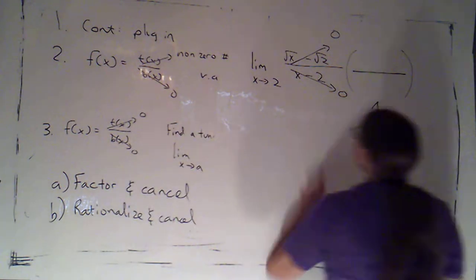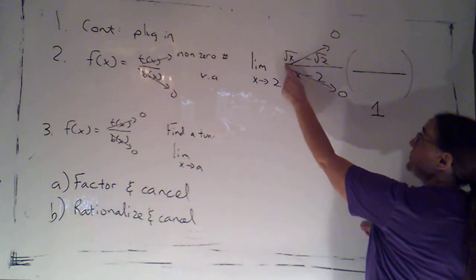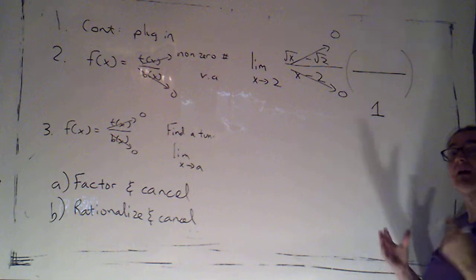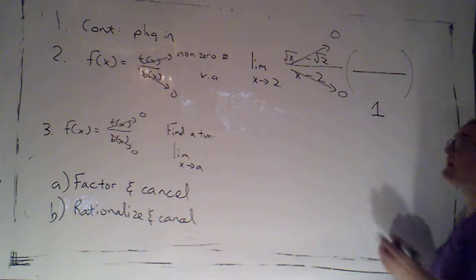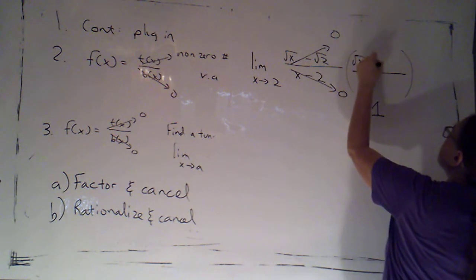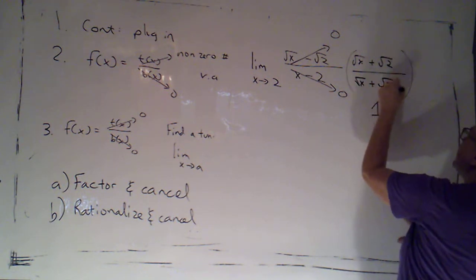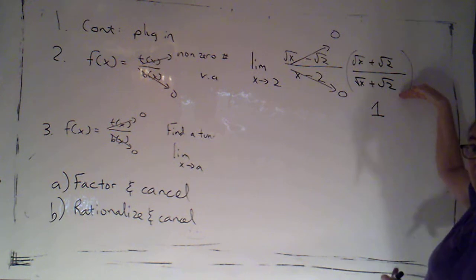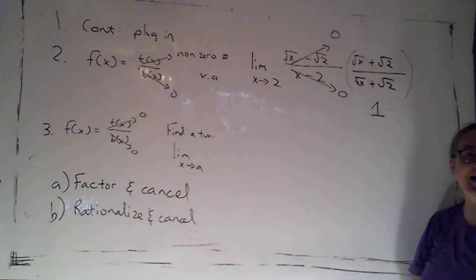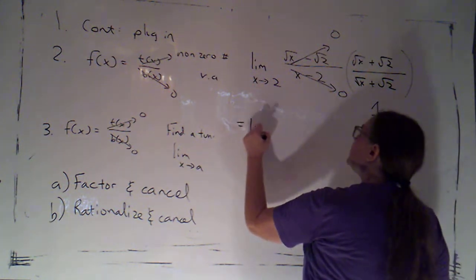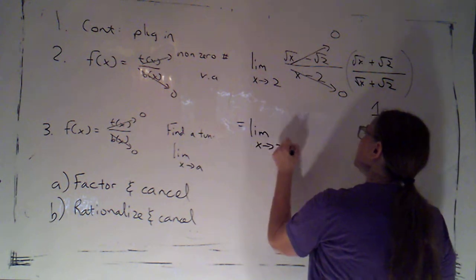The conjugate is going to be the same two terms, a root x and a root 2, but connected with the opposite sign. So it'll be root x plus root 2. And of course, I've got to multiply by that on top and on bottom, because that way I'm multiplying by one. So now this is the limit as x goes to two.